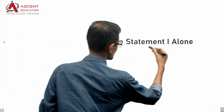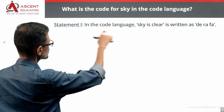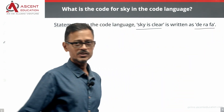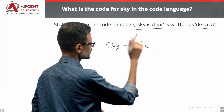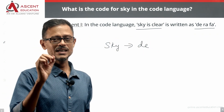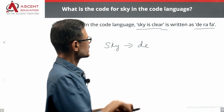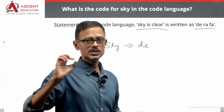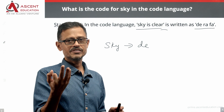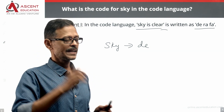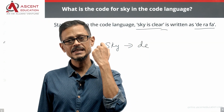Start by evaluating statement 1 alone — don't look at statement 2. In this code language, the sky is clear — coded as DRAFA. If sky is clear in this sentence, the code is D-R-A-F-A. Words appear in the same order, so the same code is in the same order. Which one stands for sky? It could be D, R, A, or FA — we don't know for certain. Sky could be D, 'is' could be R, 'clear' could be FA — but it could also be in a different order.